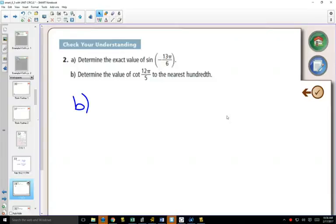Yesterday we learned about radians, and now we're going to figure out how to do things with radians in our calculator. Determine the value of cotangent of 12π over 5. We notice there's no degree sign there, so 12π over 5 is in radians.